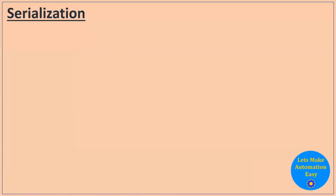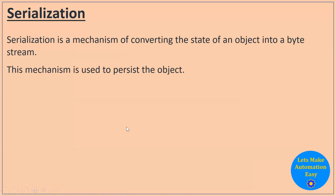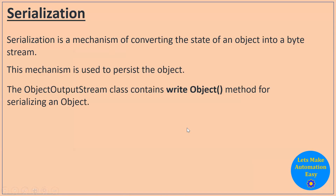Let me summarize serialization. Serialization is a mechanism to convert the state of an object into a byte stream. The purpose is that if you want to persist your data anywhere — in a file, memory, or database — you have to convert it into a byte stream first. For converting the object into the byte stream, we use the writeObject method, which is available in the ObjectOutputStream class.